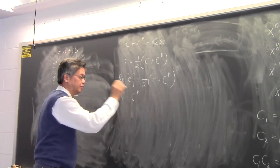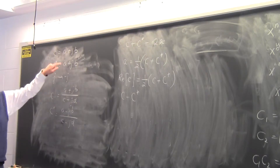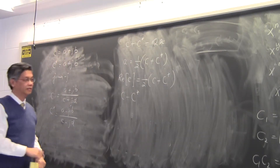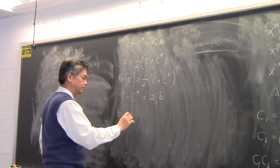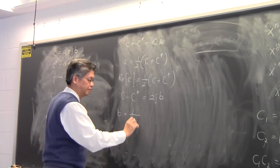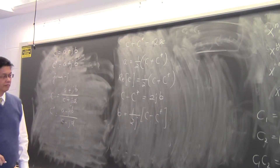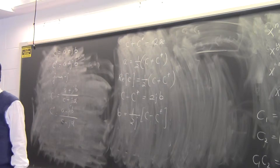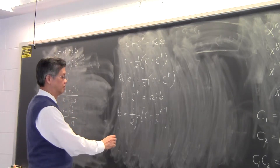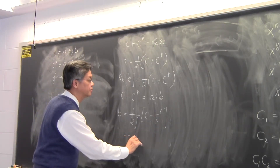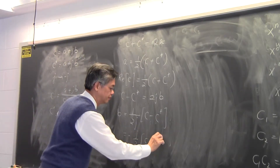Similarly, if I compute C minus C conjugate, the real parts cancel and I get 2jB on the right-hand side. Hence B equals (1/2j) times (C minus C conjugate). But what is 1 over j? We learned at the beginning of this lecture: 1 over j equals minus j. So it's equal to minus j over 2 times (C minus C conjugate).